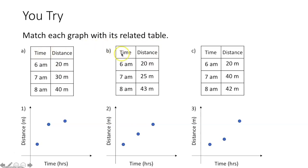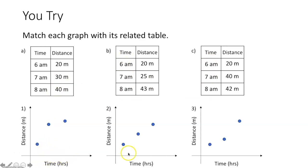Time is going to be our independent variable, just like before. But now distance is going to be our dependent variable in each of the tables and each of the graphs. In the first table, we increase by one hour for each interval, so the points should be evenly spaced along the x-axis. The y-axis spacing — represented by distance — is where they'll vary.